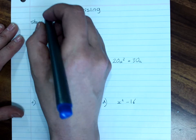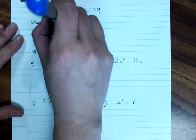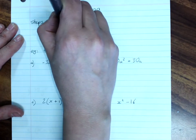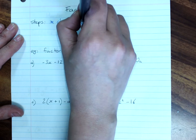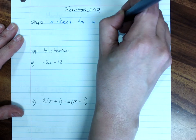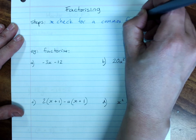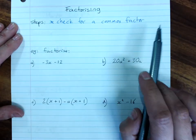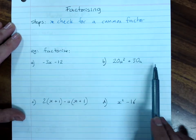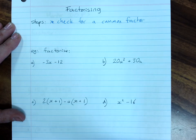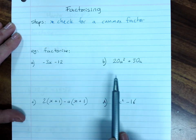When you factorize, your steps are first check for a common factor. And of course, if we find a common factor to all the terms, we factorize it out. So we'll just do the first two.